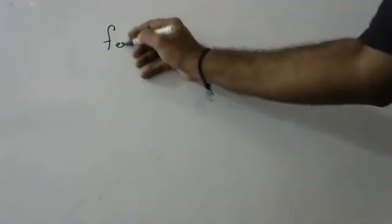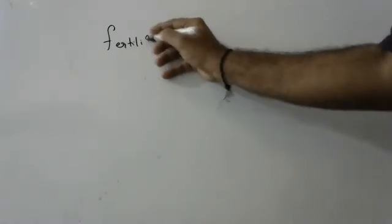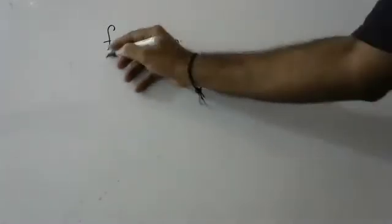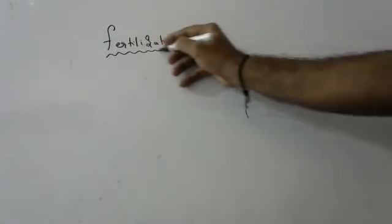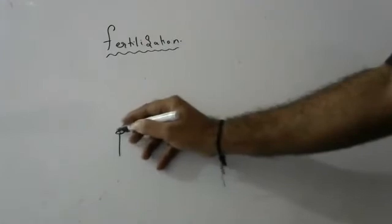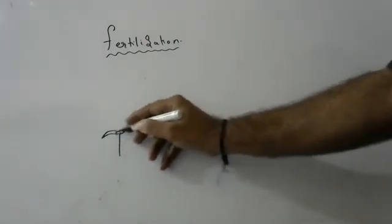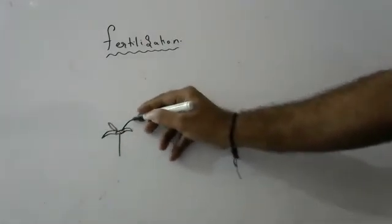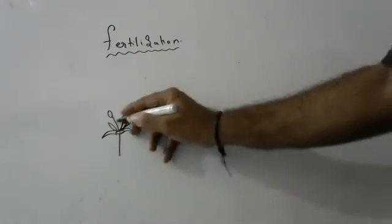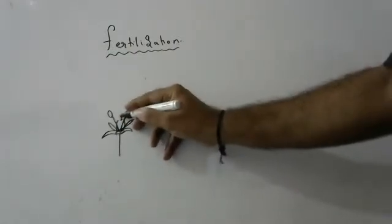Today we will discuss fertilization in angiosperms. Children, as we discussed in the structure of a flower, this is the pistil, this is the thalamus, these are sepals, these are petals, these are stamens, and this is the carpel.